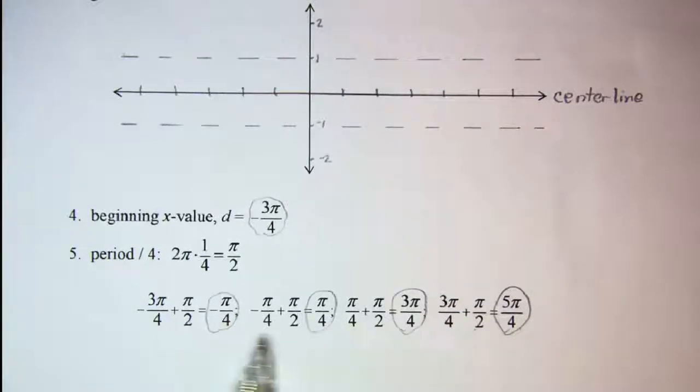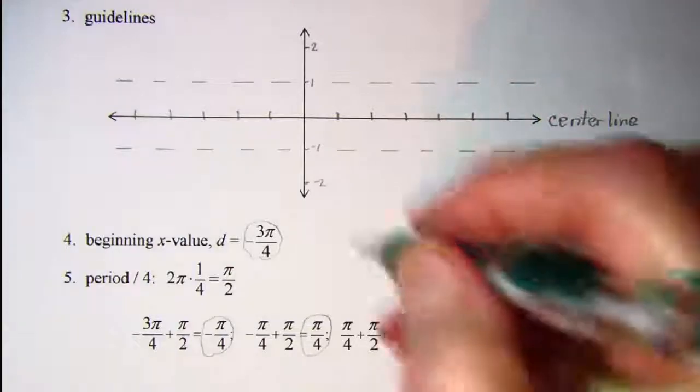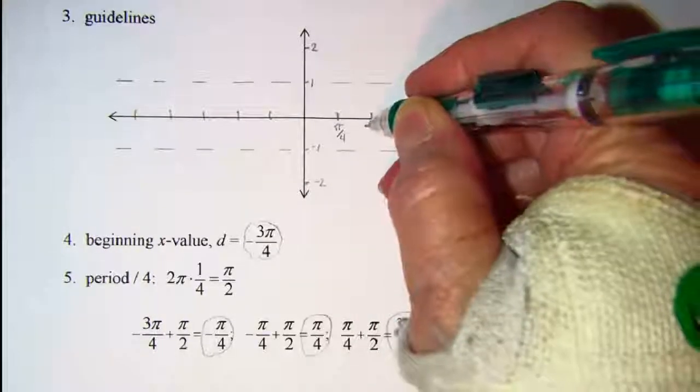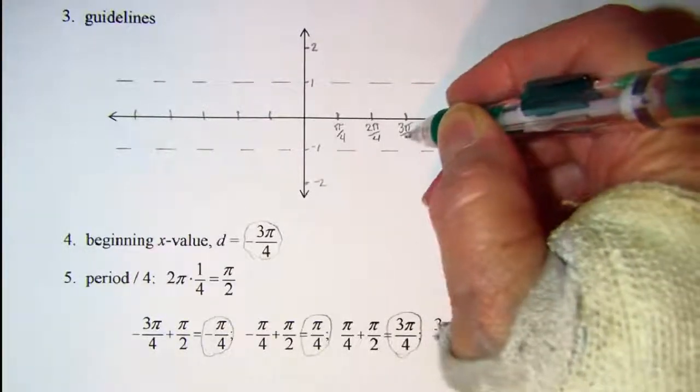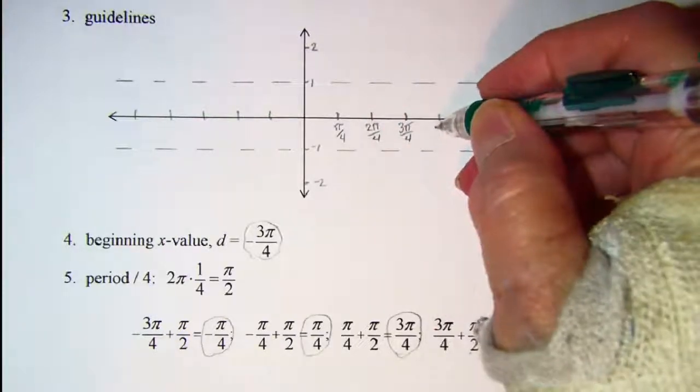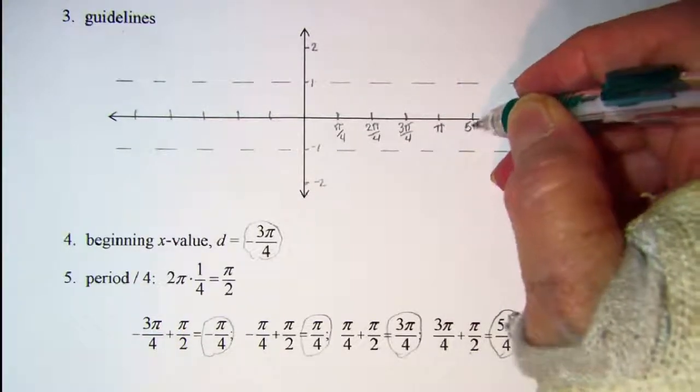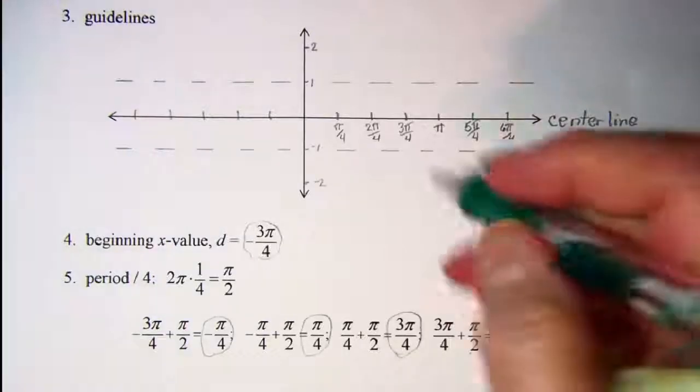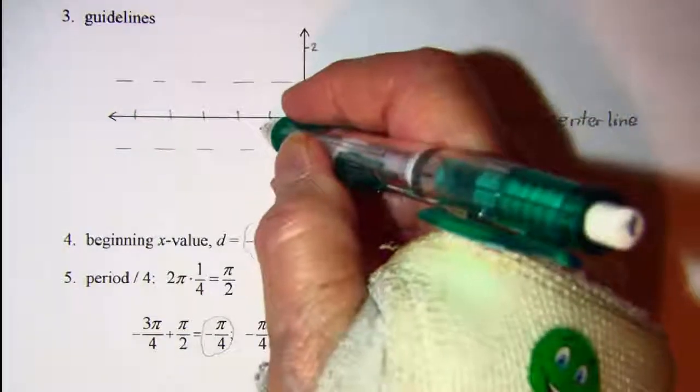All of these values have a 4 in the denominator, so I'm going to label my notches on my x axis as fourths. So we have 1 pi over 4, 2 pi over 4, 3 pi over 4, it's just as easy to keep it in fourths. So we have 4 pi over 4, which is pi, 5 pi over 4, 6 pi over 4.